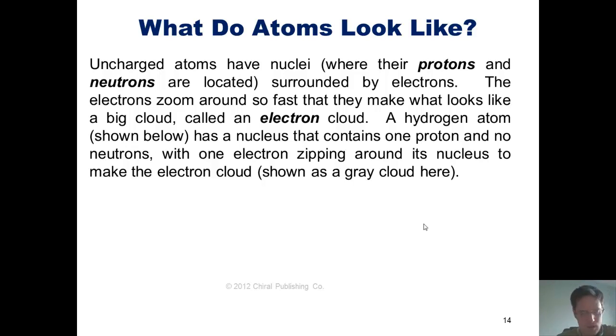The electrons zoom around in an orbit around the nuclei so fast that they make what looks kind of like a large three-dimensional cloud called an electron cloud. A hydrogen atom, which is shown right here,